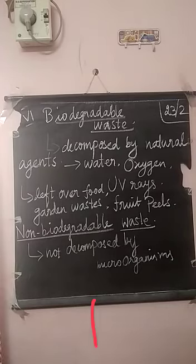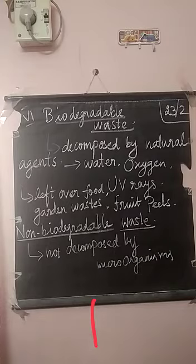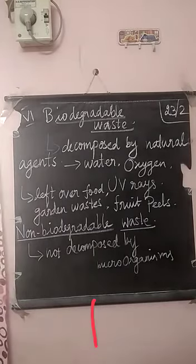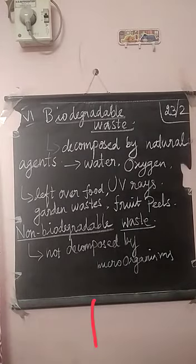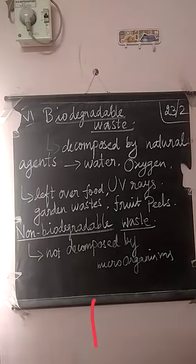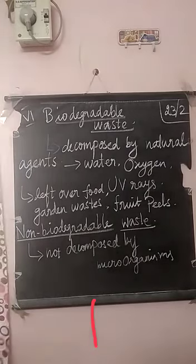Waste that is naturally decomposed by microorganisms in soil is known as biodegradable waste. Non-biodegradable waste is not decomposed by microorganisms — materials which cannot be broken down or decomposed into the soil by microorganisms. For example, plastic materials and metal straps are examples of non-biodegradable waste.